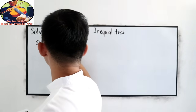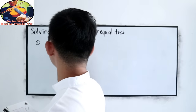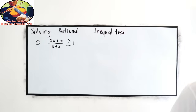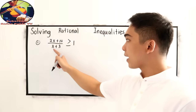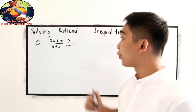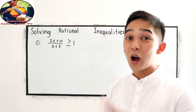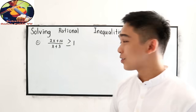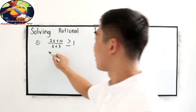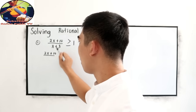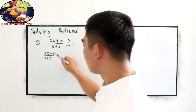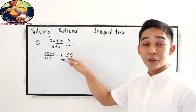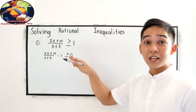Our first example is: (2x + 10) / (x + 3) ≥ 1. Our first step is the inequality must be set equal to 0. So we need to transpose positive 1: (2x + 10) / (x + 3) − 1 ≥ 0. That is our first step — the inequality must equal 0.